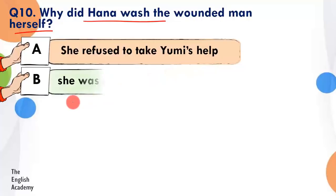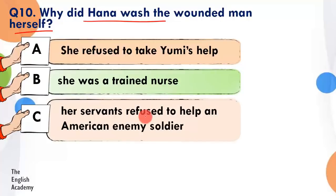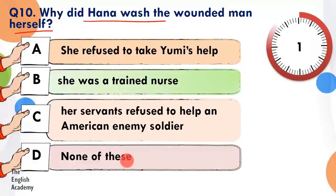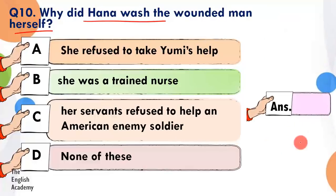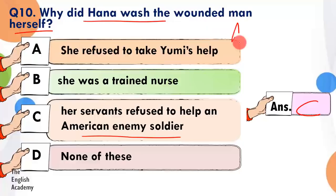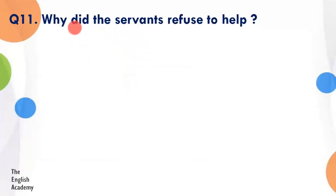Question number 10: Why did Hana wash the wounded man herself? Option A: she refused to take Yumi's help. Option B: she was a trained nurse. Option C: her servants refused to help an American enemy soldier. Option D: none of these. The answer is Option C — her servants had refused to help an American enemy soldier. Jab usne Yumi ko kaha ke woh zakhmi aadmi ko wash kare, to jaise Yumi ne dekha ke woh ek American hai, usne mana kar diya. Phir Hana ne decide kiya ke woh khud hi usse wash karegi.